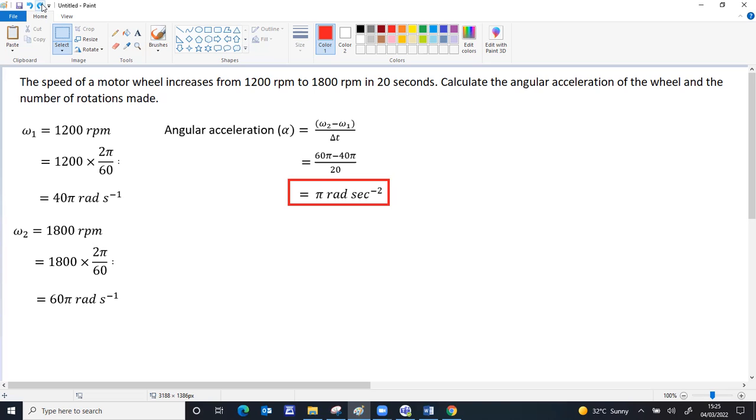Now second question, they are asking the number of rotations made. So 1 rotation is 2π, 2 rotations is 4π. So if there are n rotations, n into 2π. So if you know the total angle, dividing the total angle by 2π will give you the number of rotations.